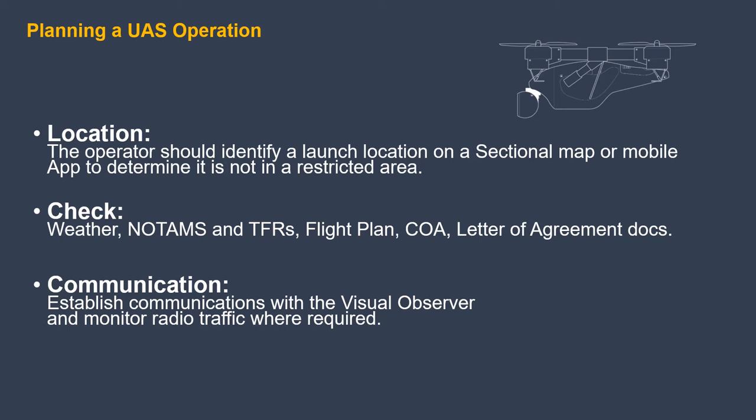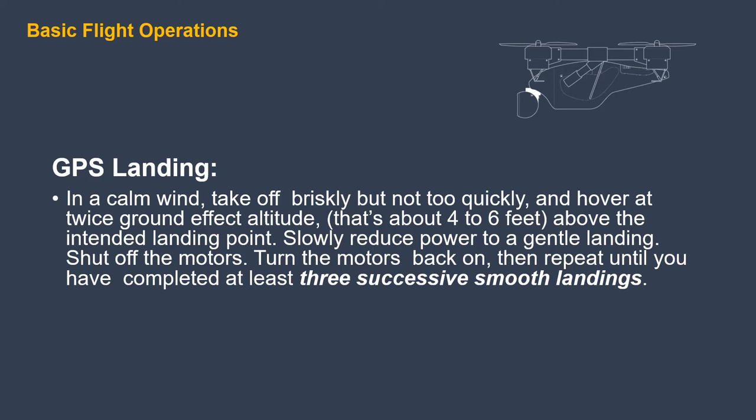Identify the launch location on a sectional map or mobile app to be sure there are no restrictions. Check the weather. Check NOTAMs and TFRs. Make sure you have a flight plan and any COA or letter of agreement documents you need. Establish communications with the visual observer and monitor radio traffic where required. GPS landing: in a calm wind, take off briskly but not too quickly and hover at twice ground effect altitude above the intended landing point — about 4 to 6 feet — then slowly reduce power to a gentle landing and shut off the motors. Repeat until you have completed at least three successive smooth landings.